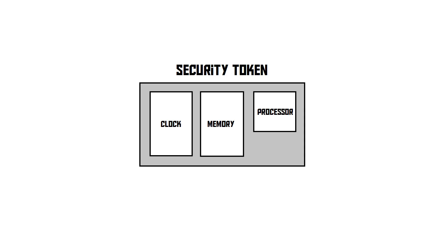The second kind of security token uses a clock — this is a rather interesting system. This security token has a few features built into it. First, it has a microprocessor capable of performing cryptographic operations. It also has memory containing a secret key — a secret code that only the server knows, and which is also stored in the memory of the security token. Nobody else knows this; not even the owner of the token knows this code. And finally, there is also a clock built into the security token.